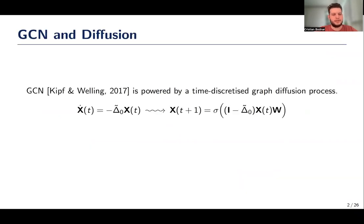The heat diffusion equation is a partial differential equation describing the spreading of heat on a graph. The well-known graph convolutional network, or GCN, proposed by Kipf and Welling, can be seen as a non-linear parametric and time discretized version of this diffusion process.